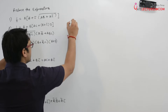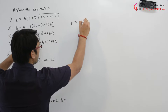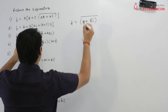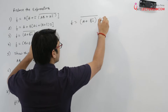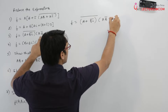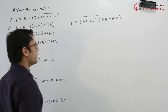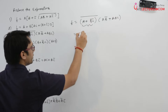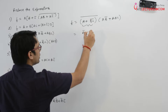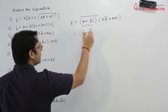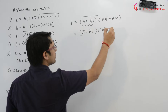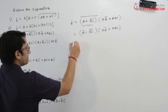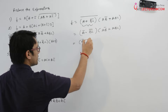Now let us try to solve the next question. The function is (a + bc)' · (ab' + abc). Let us apply De Morgan's law here. So it will be a'·(bc)' multiplied by bc, which can be written as a'·bc.